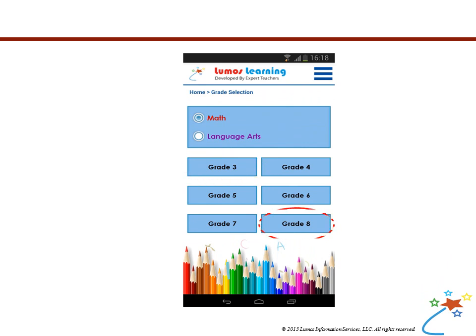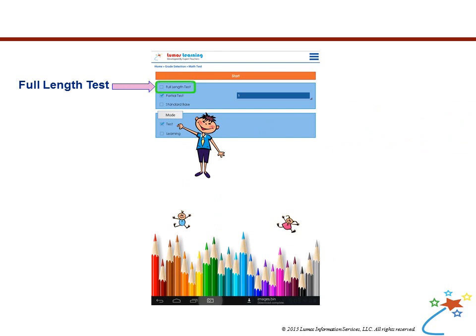Students have three options when using the app. They can take a full cumulative test of mixed standards, a partial test where a certain number of questions are chosen, or access content for a specific standard.